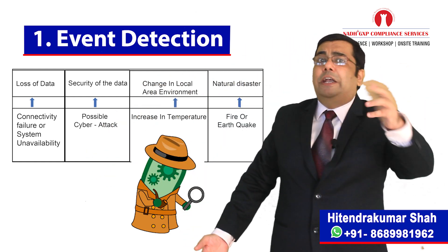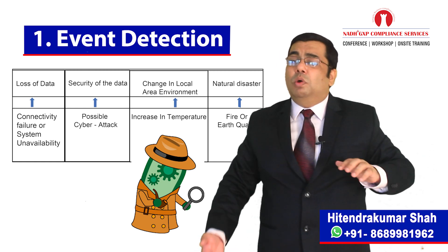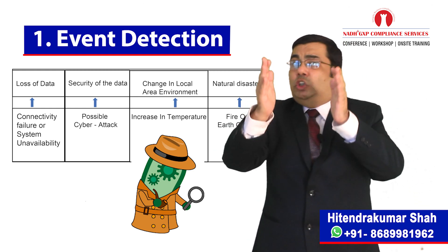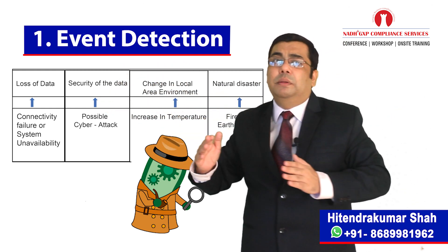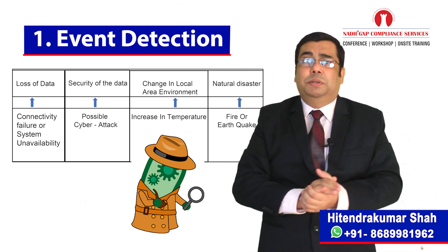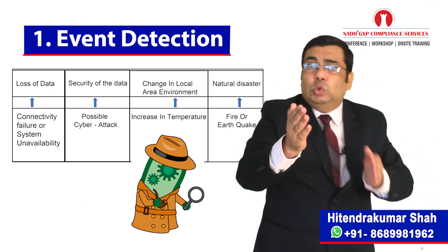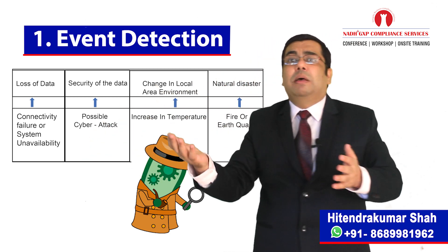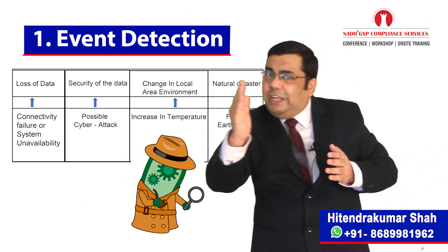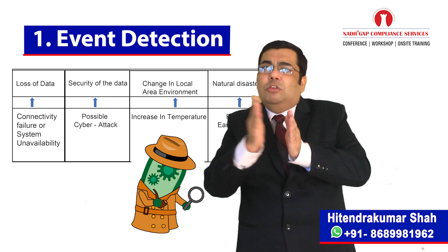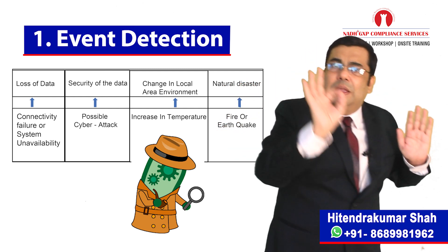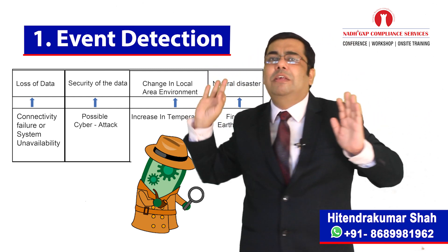Or the event may be related to security of the data — for example, due to a possible cyber attack. Or the event may be related to change in the local area environment, for example an increase in temperature where the system is placed. Or the event may be related to a natural disaster — for example, fire or earthquake. We have to consider each such event and evaluate the maximum tolerable unavailability of the system, and the same should be recorded in our business continuity plan.